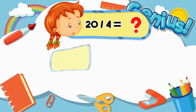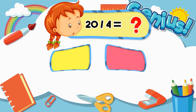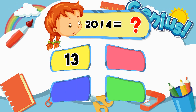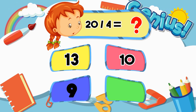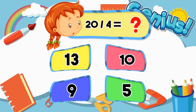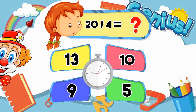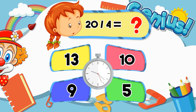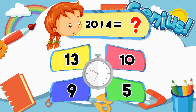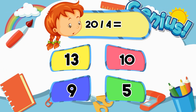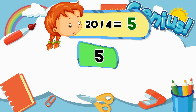What is 20 divided by 4? 13, 10, 9, 5. Answer: 5.